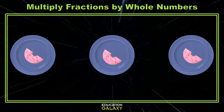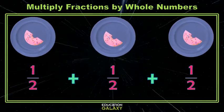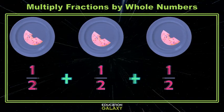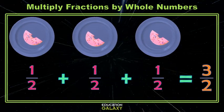Here I have three plates, and each plate has one half of a donut. If I wanted to know the total number of donuts, I could add one half three times, still using our friend repeated addition. And I know that that is three halves, correct.